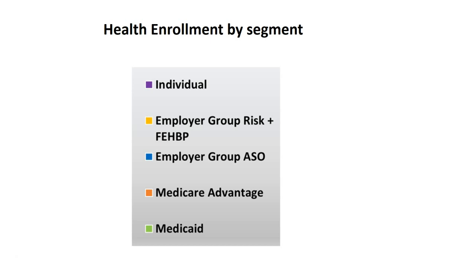The employer group plan is a government-provided employer benefit plan. Medicare and Medicaid are also provided by the federal government. To keep a benefit plan or policy active, individuals must pay a premium. If an individual purchased a policy, they pay the premium themselves; if someone is working for a company, that company pays the premium to the insurance company.